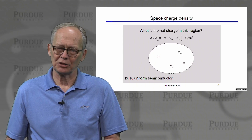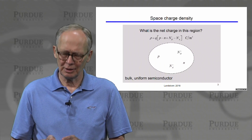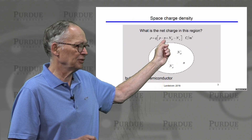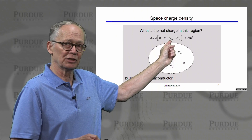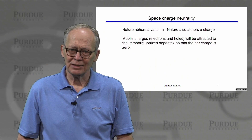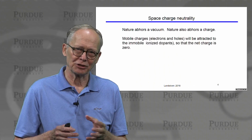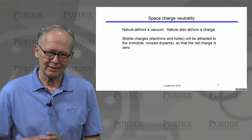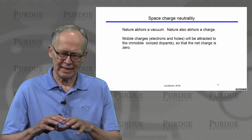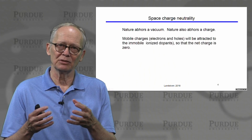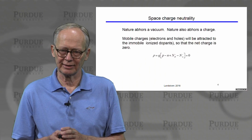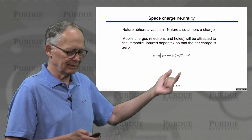Our question is: what is the net charge in this region of the semiconductor in coulombs per cubic meter? It's simply the charge on an electron times the concentration of mobile positive charges, minus the concentration of mobile negative charges, plus the concentration of fixed positive charges due to the donors, minus the concentration of fixed negative charges due to the ionized acceptors. Nature doesn't like a charge imbalance — it wants the net charge to be zero. The mobile charges will move around; positive charges attract negative charges, and in the end, the net charge within any given region should be zero, canceled by the mobile charges.